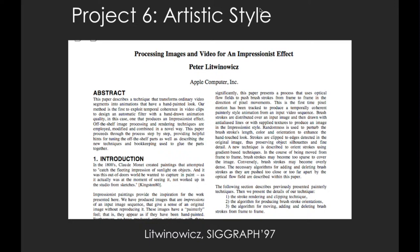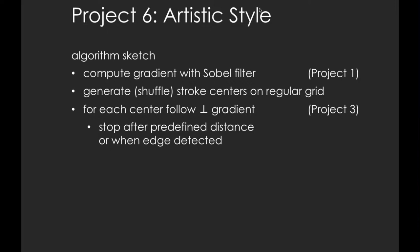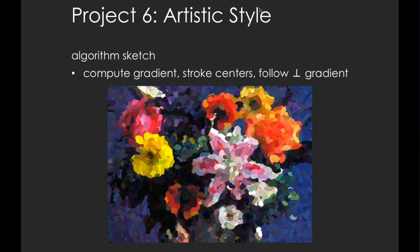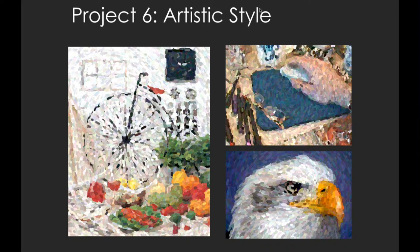Project 6 introduced a technique for processing an image to produce an impressionist effect. The algorithm computes the gradient, generates stroke centers on a regular grid processed in random order, extends each stroke in opposite directions following tangents to the gradient, similar to projects 3 and 4, stopping after a predefined distance or when an edge is detected.